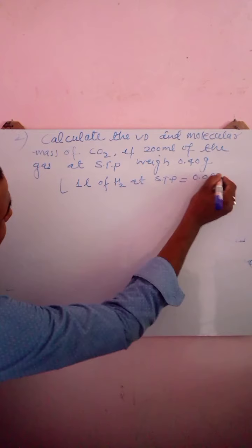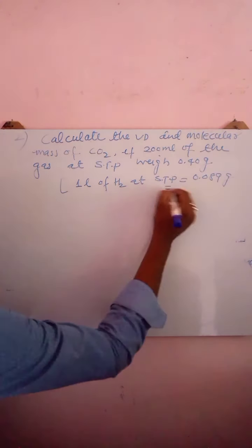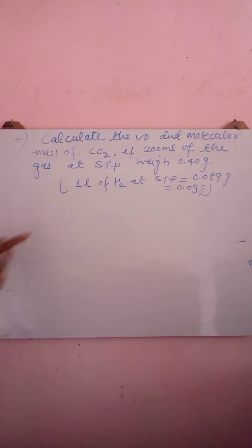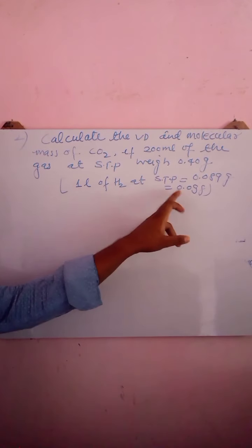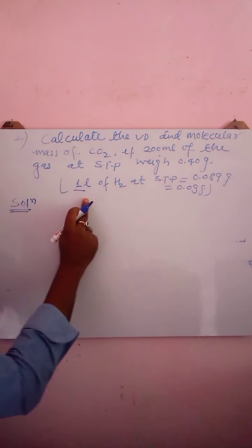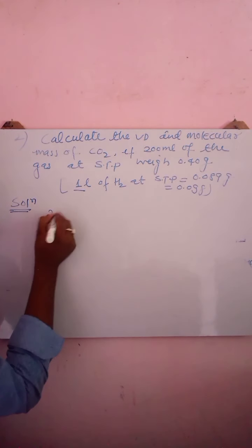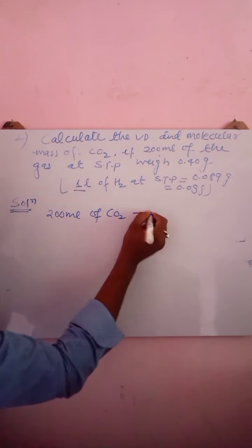We need to find the weight of one liter of CO₂, because vapor density means the mass of the same volume compared to hydrogen. Mass of one liter of hydrogen is 0.09 grams. If we find the mass of one liter of CO₂, we can easily get the vapor density and then the molecular mass.